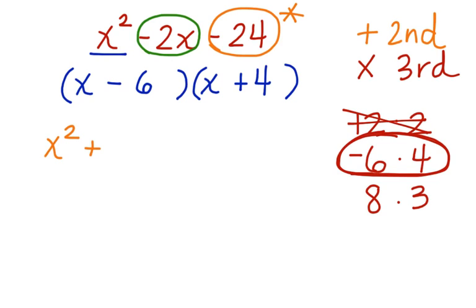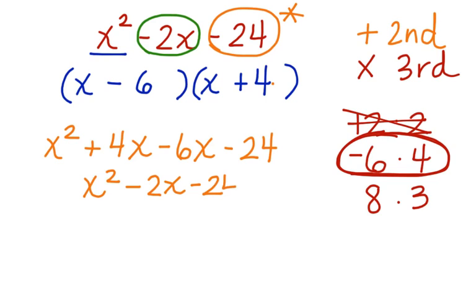x times 4 gives me positive 4x. Negative 6 times x gives me negative 6x. Negative 6 times 4 gives me a negative 24. Combine like terms and I get x squared minus 2x minus 24. This is my answer and my work is now complete.